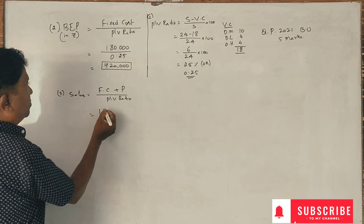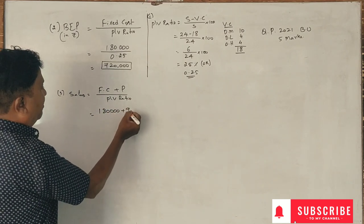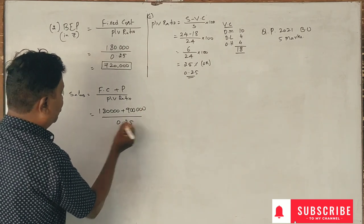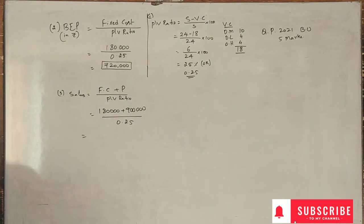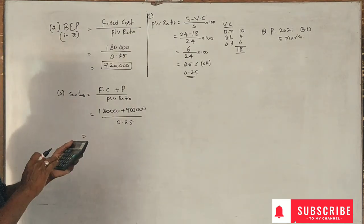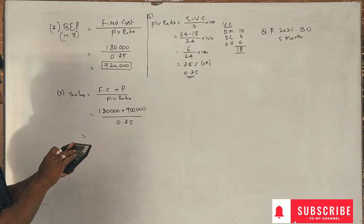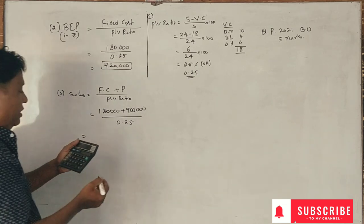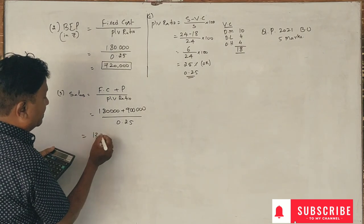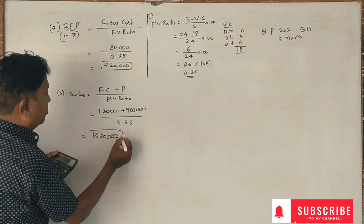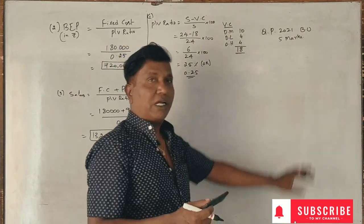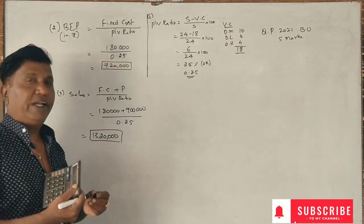Fixed cost 1,80,000 plus profit of 9 lakhs divided by 0.25 equals 13,20,000 rupees in sales. This is the first semester accounting for managers question from 2021.